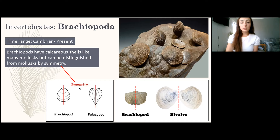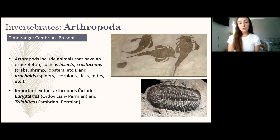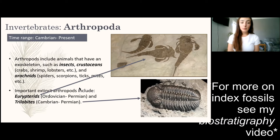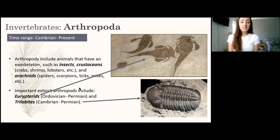The next phylum is Arthropoda, which has been around since the Cambrian. Modern arthropods include insects, crustaceans like crabs, shrimps, and lobsters, and arachnids like spiders, scorpions, ticks, and mites. Two important extinct arthropod groups are eurypterids and trilobites, which make excellent index fossils — they were widespread worldwide and their morphology changed quickly enough through time that they tell us precisely where we are in the Paleozoic rock record.